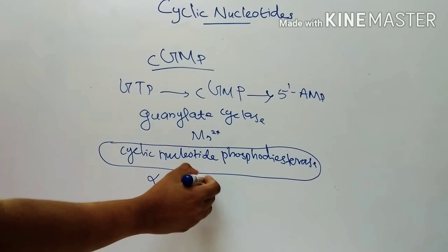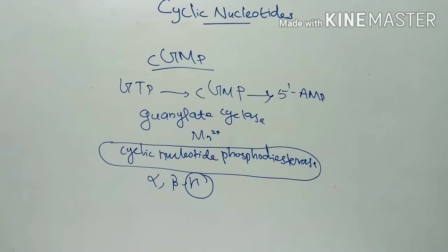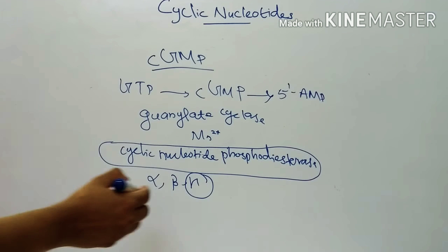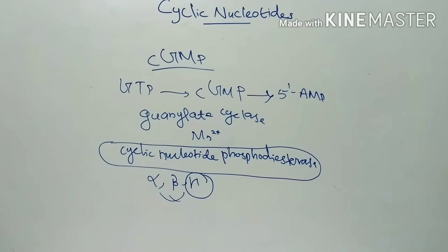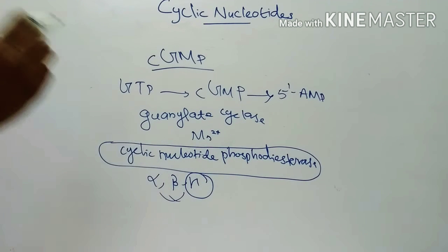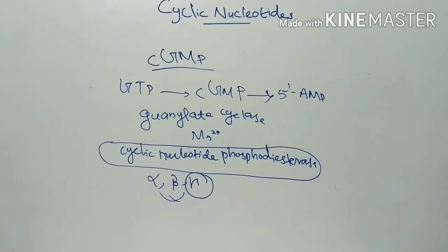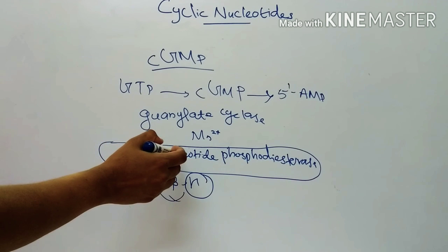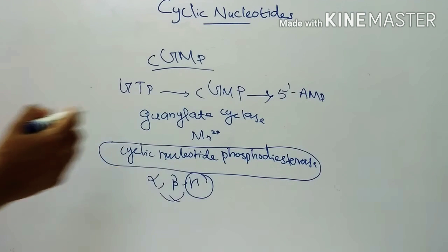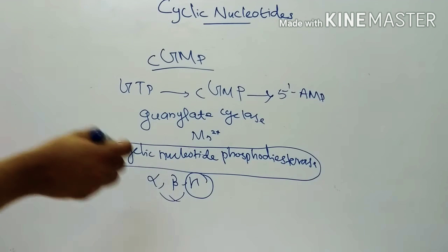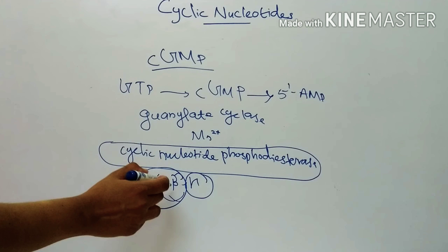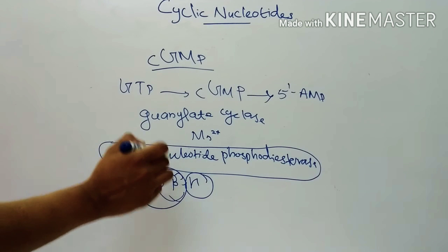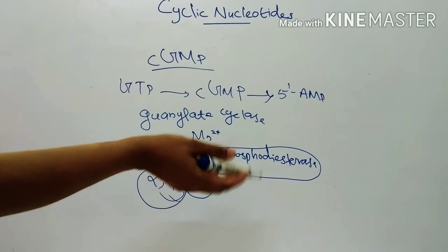The gamma subunit is inhibitory. Binding of the gamma subunit activates phosphodiesterase alpha and beta. This activated phosphodiesterase alpha and beta then catalyzes the hydrolysis of cyclic GMP to 5' AMP.